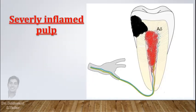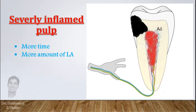During the access opening, if the patient complains of pain, this is because of severely inflamed pulp. Inflamed pulp needs more time and more anesthetic solution to get anesthetized. So if you have achieved proper signs of anesthesia in the lip, tongue, and gingival tissue, there can still be a need for another block for the inflamed pulp.